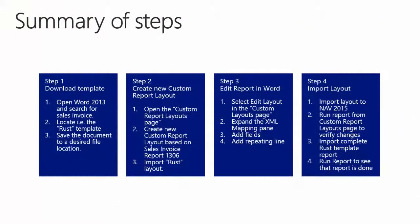To summarize: we first downloaded the Rust template in Word and saved it to our desktop. We then created a new custom report layout based on sales invoice 1306 and applied the Rust template. We added a few fields and made the line repeat in Word, then imported the changes back to NAV 2015 and printed the report. Finally, I imported a completed Rust template, printed the report, and you could use this report when sending out invoices if you like the Rust template.